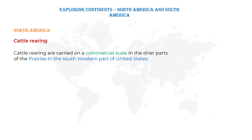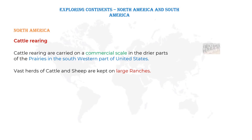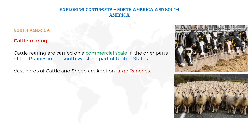In the United States, in the southwestern parts, cattle and sheep are kept on large ranches. Ranches means farms — a large number of cattle were reared here.